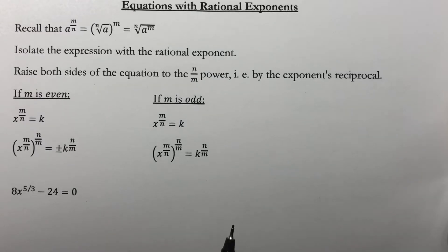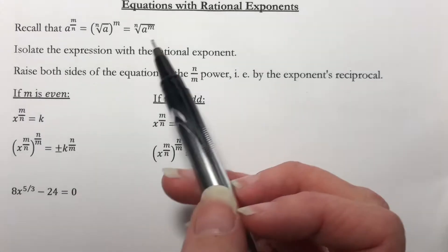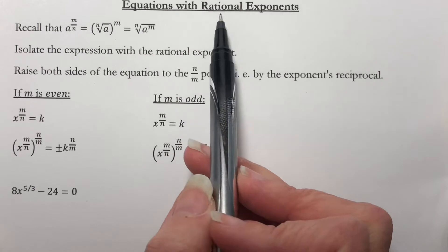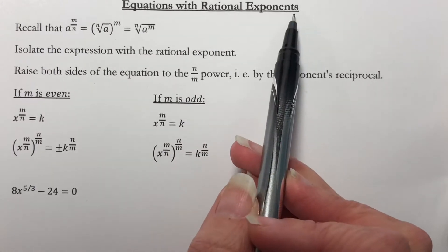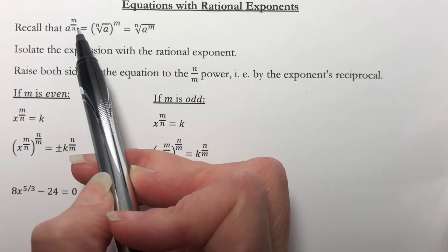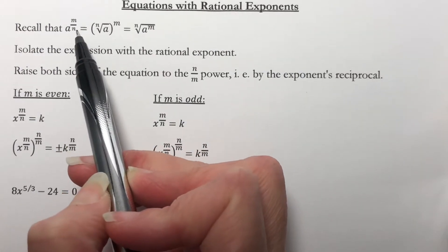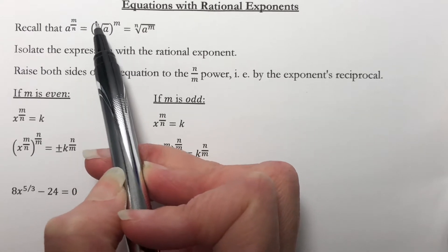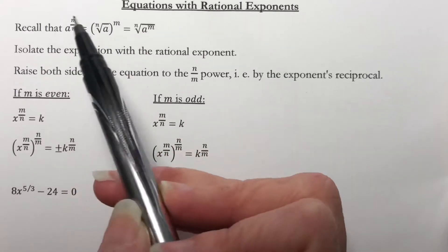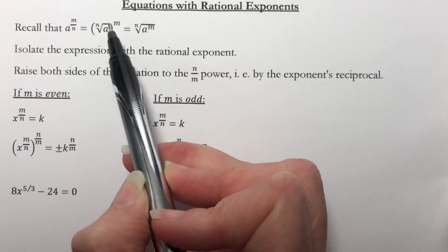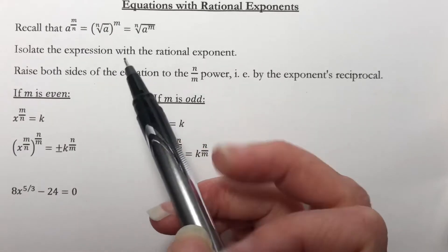This is part 4 of section 1.6. We're now going to talk about equations with rational exponents. As a reminder, a fractional exponent — the denominator tells you the index of your radical, and the numerator tells you the power you're going to raise it to.